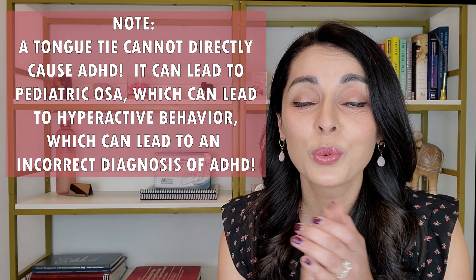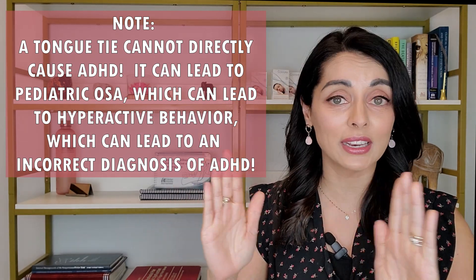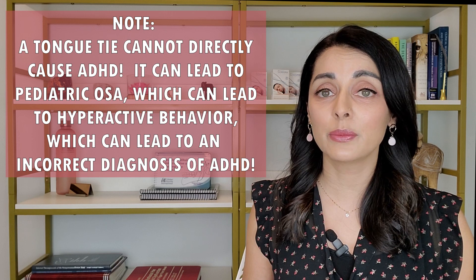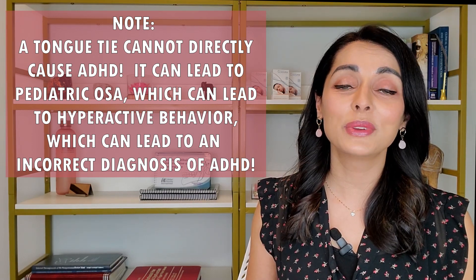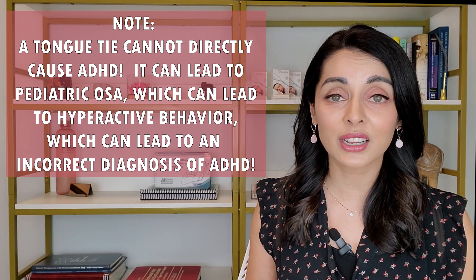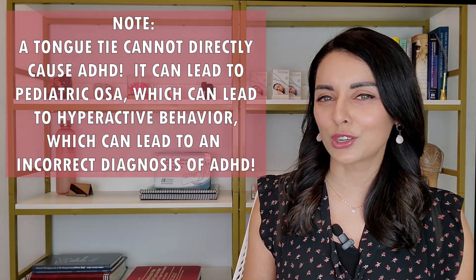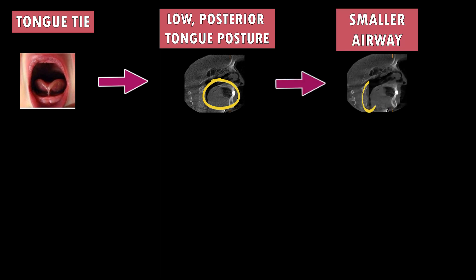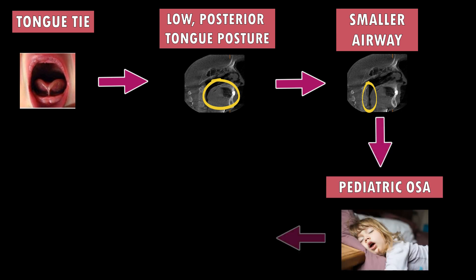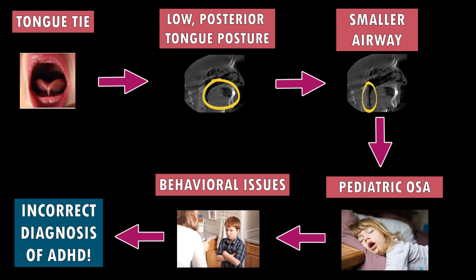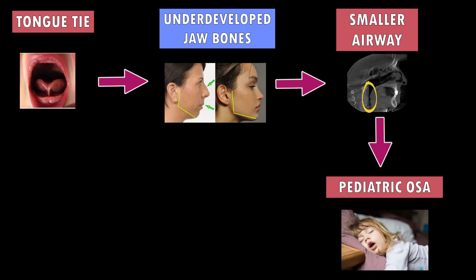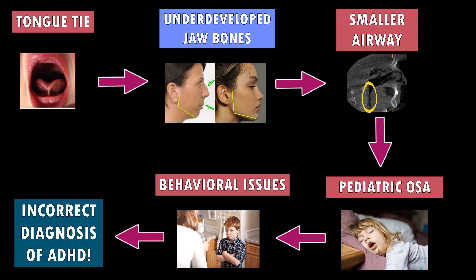To clarify: a tongue tie cannot directly cause ADHD. What I am saying is that a tongue tie can increase the risk of pediatric obstructive sleep apnea, which leads to behavioral issues, which can then be misdiagnosed as ADHD when the real issue is chronic exhaustion and sleep apnea. Looking at these flow charts: a tongue tie can lead to low and posterior tongue posture → smaller airway → pediatric OSA → behavioral issues → incorrect diagnosis of ADHD. And: a tongue tie can lead to underdeveloped jaw bones → smaller airway → pediatric OSA → behavioral issues → incorrect diagnosis of ADHD.